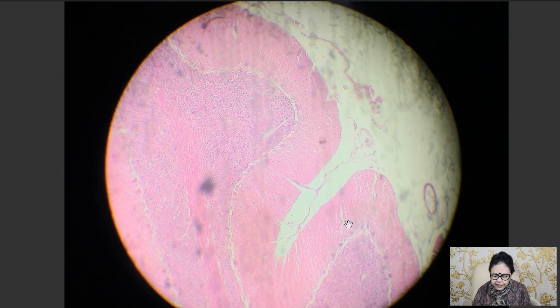So this is a single folium, and this is another folium. In between the two folia, there is a deep fissure.